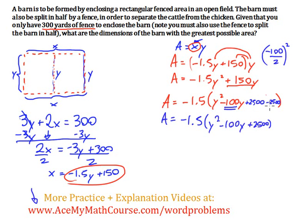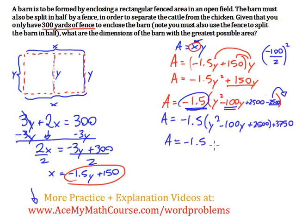Now I want to move the minus 2,500 outside the parentheses. To do that, I multiply it by negative 1.5, which gives 3,750. So we get negative 1.5 times the quantity y minus 50 squared — because negative 100 divided by 2 is negative 50 — plus 3,750. So we have successfully completed the square.